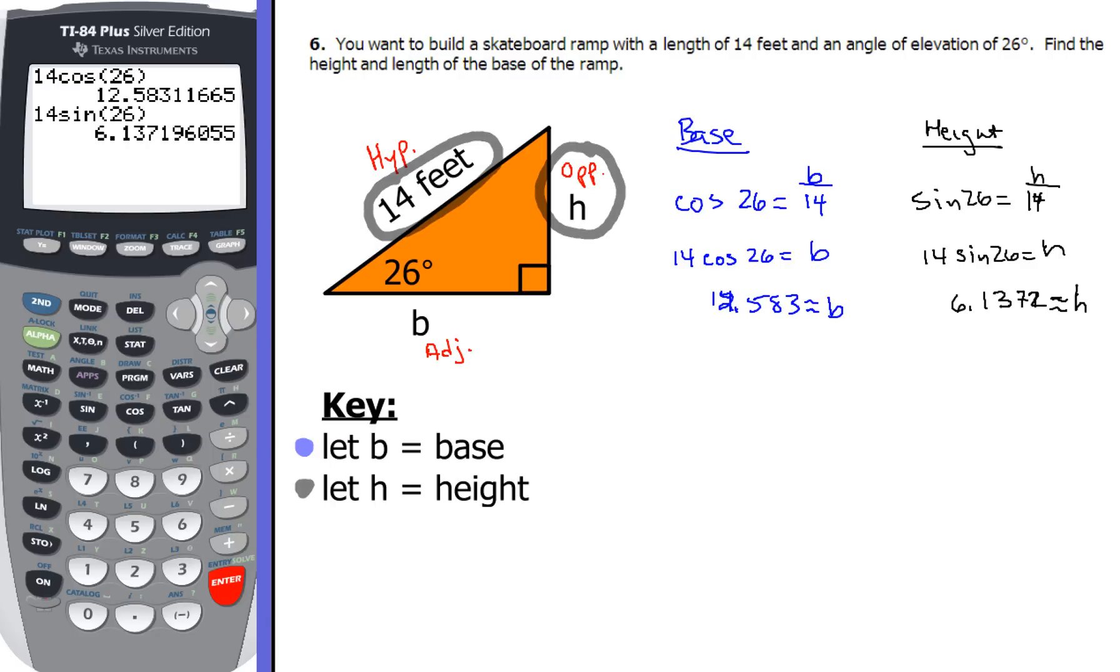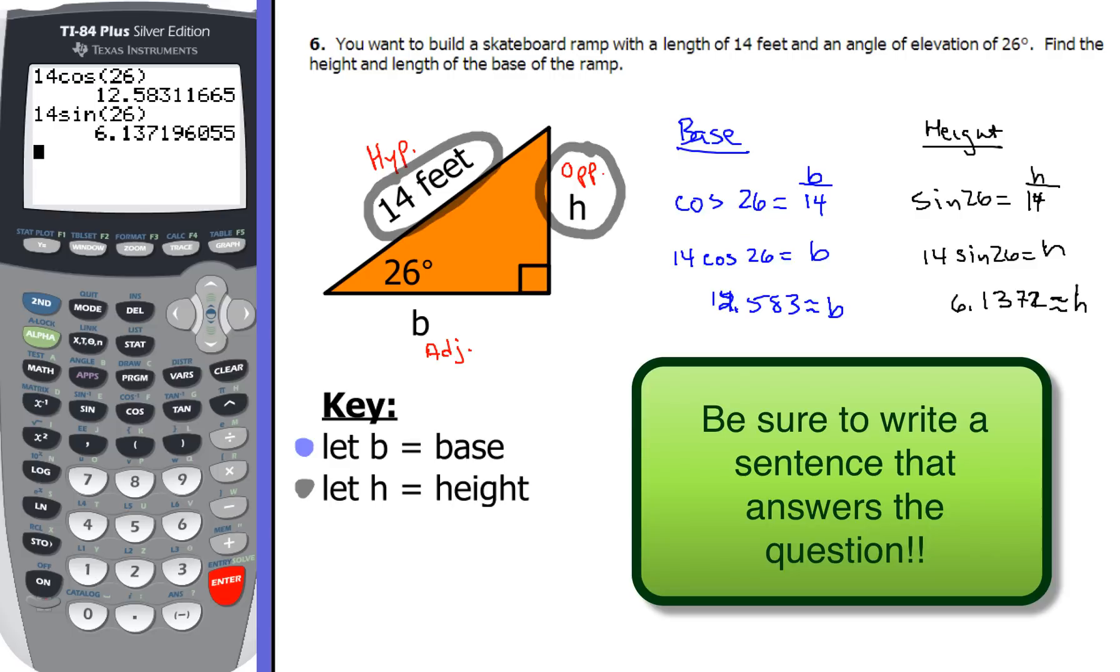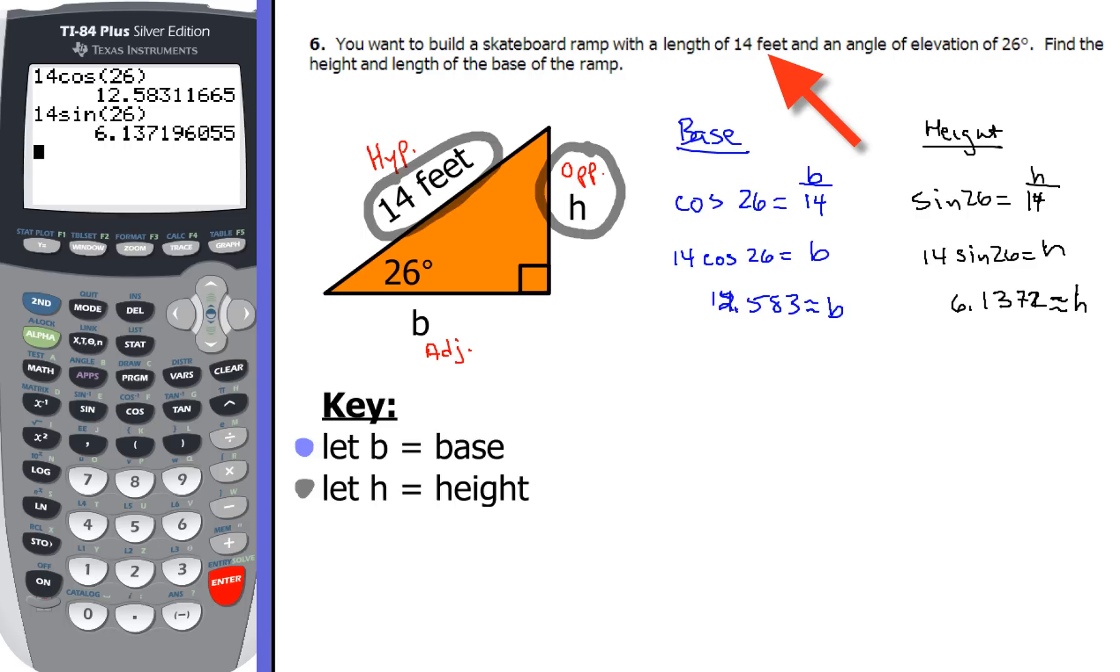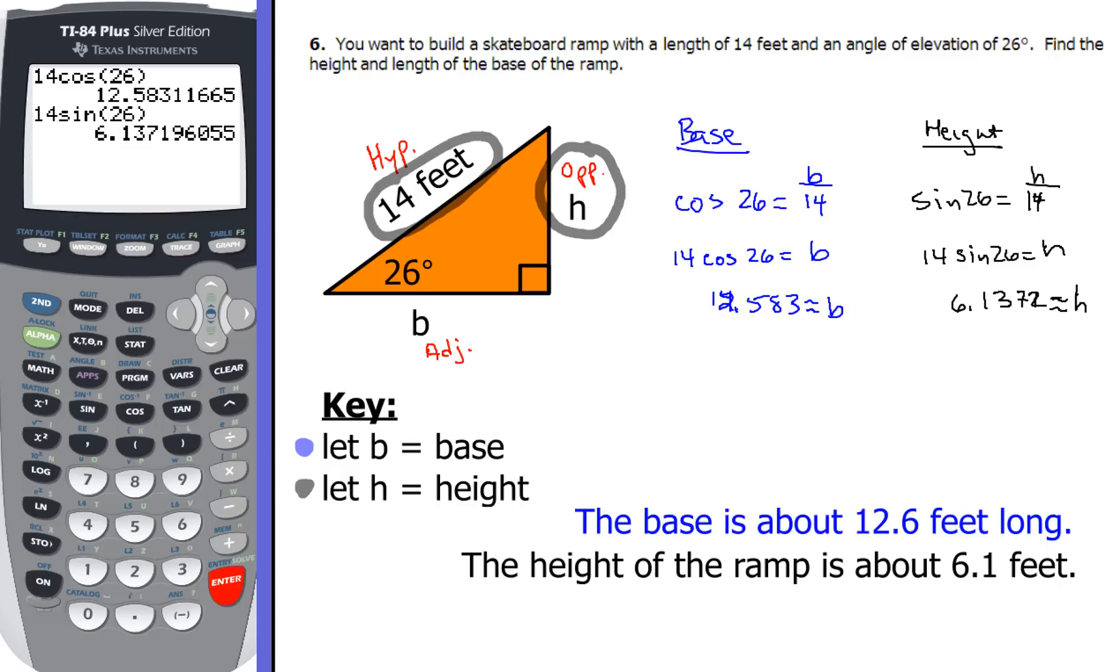So to find the height, the first thing we'll do is we'll have sine of 26 equals h over 14, and when you cross multiply and key that into your calculator, you get about 6.1372. Now we're not done yet because most people will stop there, and that's a common error alert. So make sure you go back and you write a sentence that answers the question. Now when you go to write your sentence, notice the units that were given in our original problem says 14 feet. So when we write our sentence, we want to round it to the nearest whole number or maybe the nearest tenth, and then we're going to include units in our answer. The base is about 12.6 feet long, and the height of the ramp is about 6.1 feet.